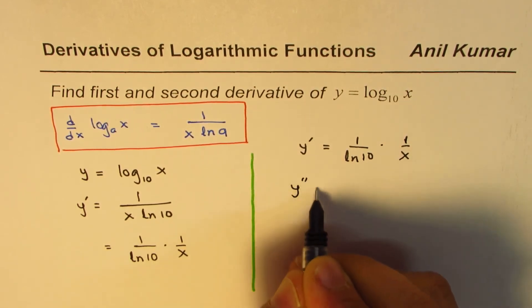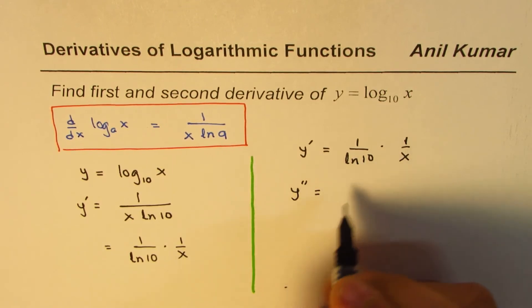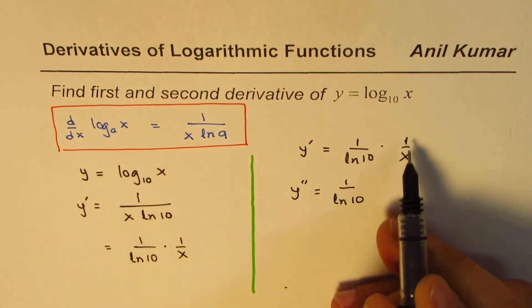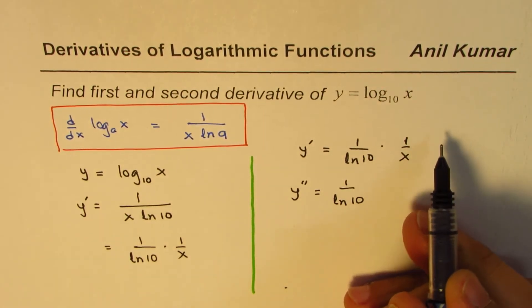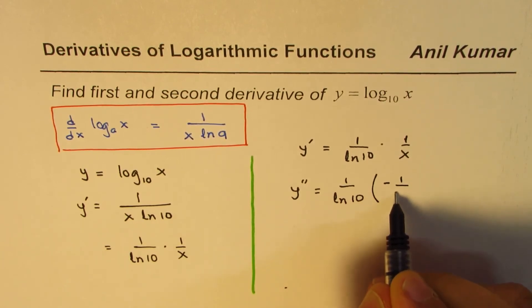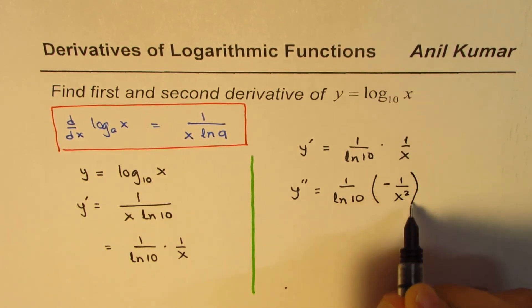Now, the second derivative will be the derivative of this function. 1 over ln 10 is a constant, so it just comes like this. And the derivative of 1 over x, which is x to the power of minus 1, is minus 1 over x squared.